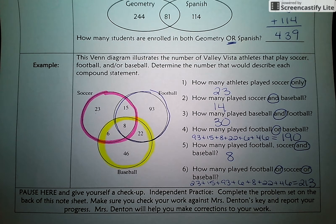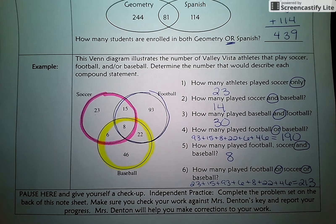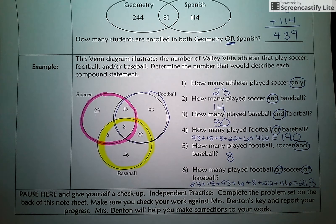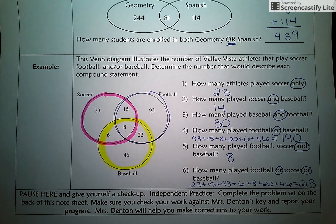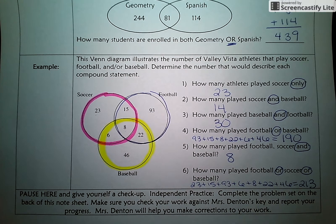I hope this was a good example of how to read a Venn Diagram and of the difference between an OR statement versus an AND statement. Pause here, give yourself a checkup, and complete the independent practice on the worksheet that goes with this. Make sure you check it with my key and let me see it so I can go through any mistakes and get everything cleaned up before we move on.